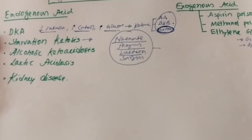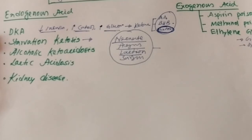Alcoholic ketoacidosis develops in chronically alcoholic and chronically malnourished patients. It occurs when these patients have an event of binge drinking — heavy alcohol consumption on the background of chronic alcoholism — which predisposes the patient to development of alcoholic ketoacidosis.